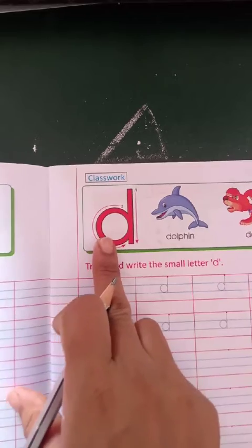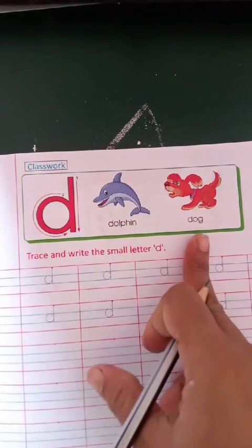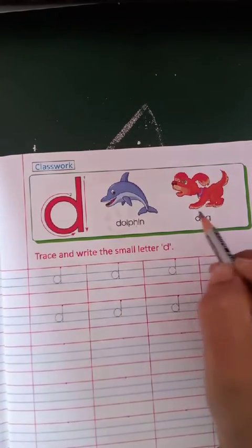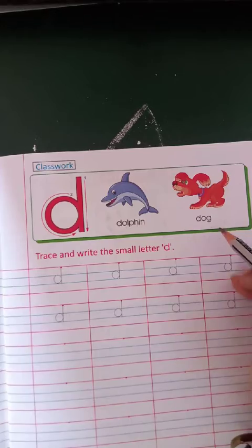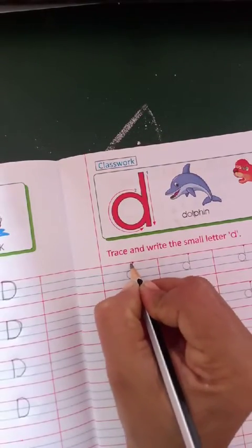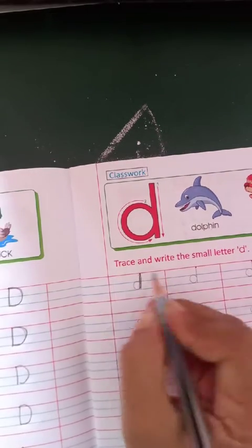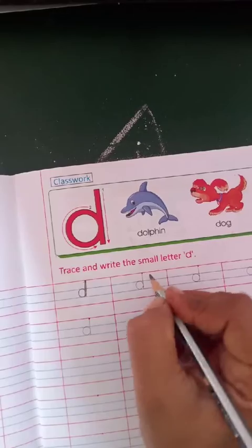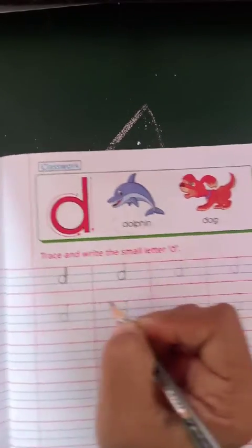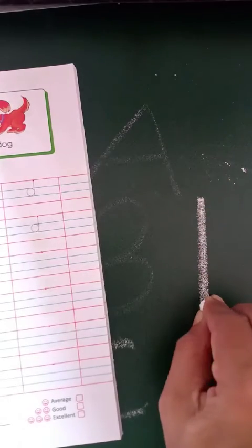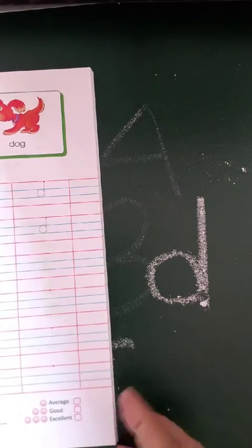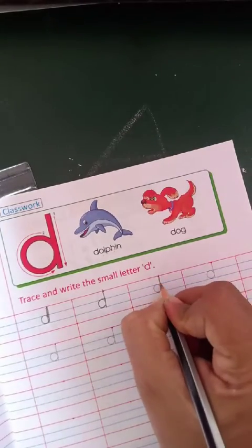Chalo start kare. From the red dot, make a line. And neechi se circle — only one line and circle, left side. Okay? Line, left side circle. So this is your small d. Can you see here, students? Here, make a line and left side neechi circle — this is your d. Chalo start kare. Line circle.